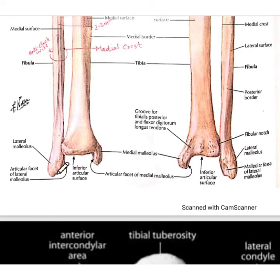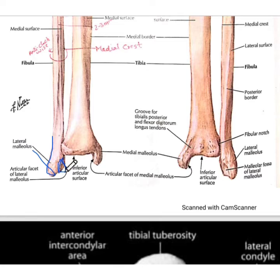Its lower end is expanded anteroposteriorly, but it is flattened from side to side. At its lower end, it is prolonged laterally to form the lateral malleolus. Just medial to this lateral malleolus, there is a triangular articulating facet for articulation with the tibia bone. Its lower end also consists of a fossa, which is known as the malleolar fossa of the lateral malleolus.